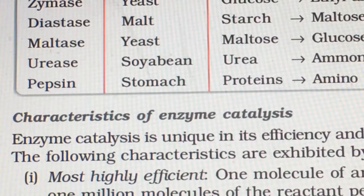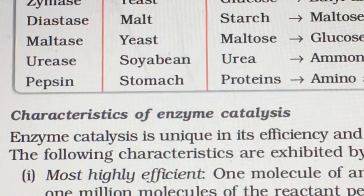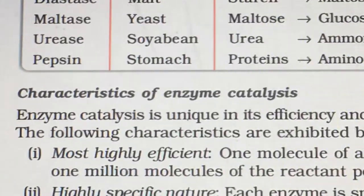Pepsin, trypsin, amylopsin - so many enzymes are there in the stomach which work in acidic medium and convert proteins to amino acids.